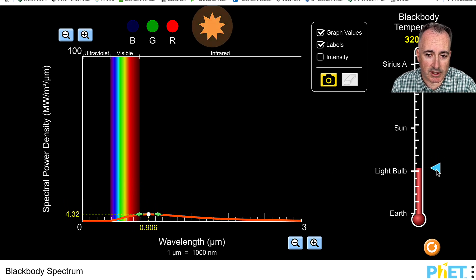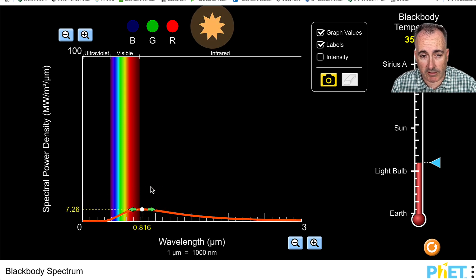Do you notice it started off over here and it moved to the right? What that tells you is that as things get cooler, they move towards the right of the spectrum here. In other words, towards redder colors.